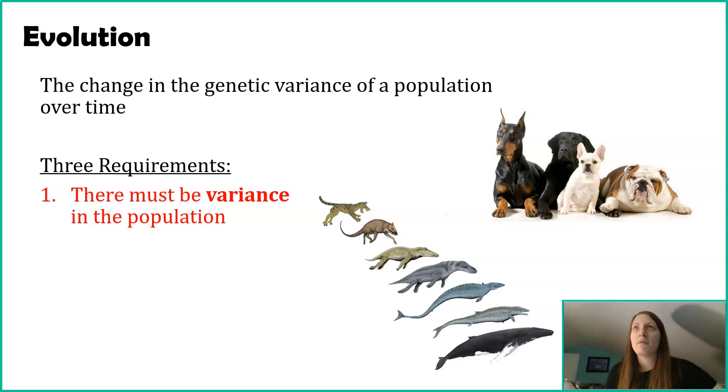Variance can occur in tons of different ways. A lot of the variance people think of are physical characteristics. So with humans, you might think of hair color, eye color, how tall you are. You could even think about things that are more mental, thinking about IQ or mental capacity for different things. But variance can also be at the molecular level, how efficient different enzymes are or how the body is processing different things or reacting to different stimuli.